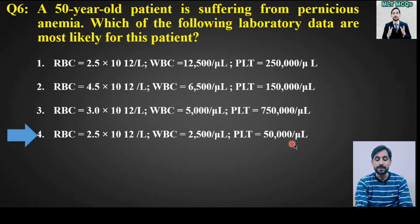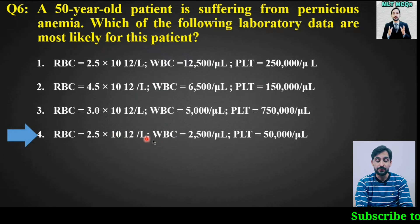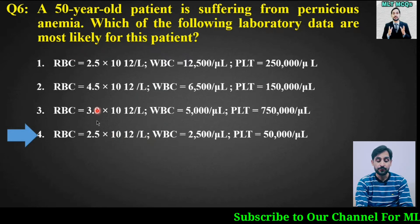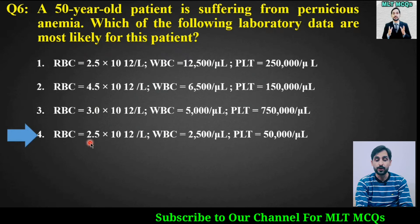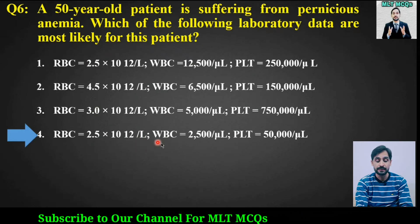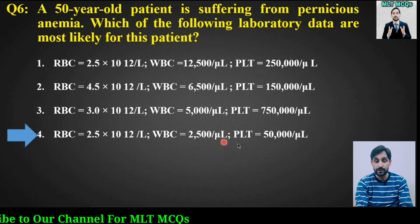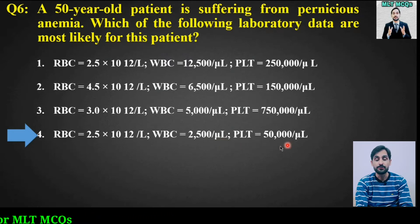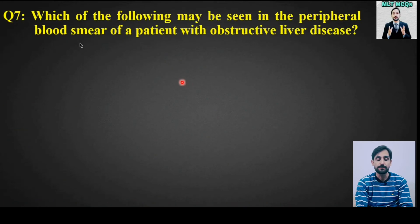The right answer is option number 4. All 3 basic parameters will be low in a patient with pernicious anemia aged 50 years. So RBC count will be 2.5×10¹²/L, WBC count will be 2500/µL, and platelet count will be 50000/µL.